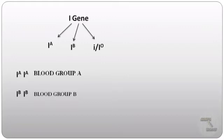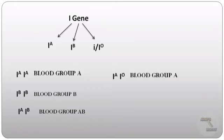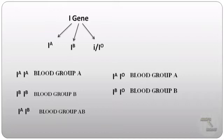Similarly, if Iᴮ is present in the homozygous condition — meaning IᴮIᴮ — it will give rise to blood group B. If Iᴬ and Iᴮ are present together, they give rise to blood group AB. If Iᴬ and Iᵒ are present together, it gives rise to blood group A, since Iᴬ is dominant over Iᵒ. Similarly, if Iᴮ and Iᵒ are present together, it gives rise to blood group B, since Iᴮ is dominant over Iᵒ. If Iᵒ is present in the homozygous condition — IᵒIᵒ — it gives rise to blood group O.